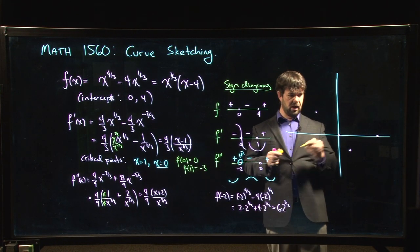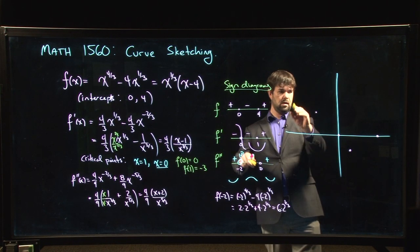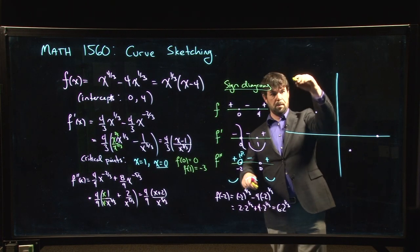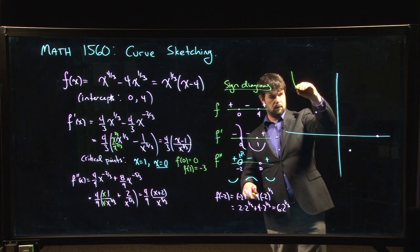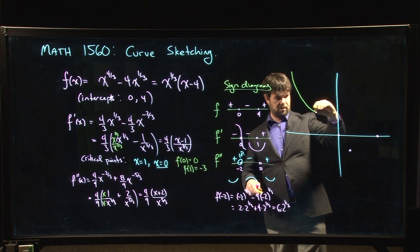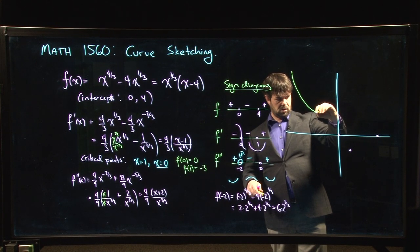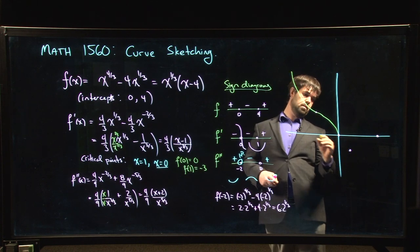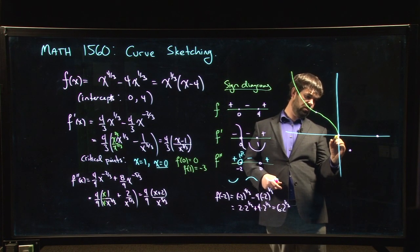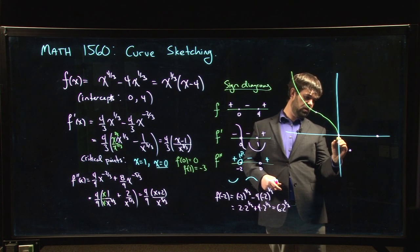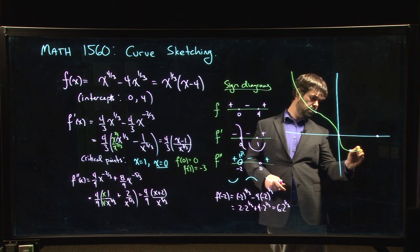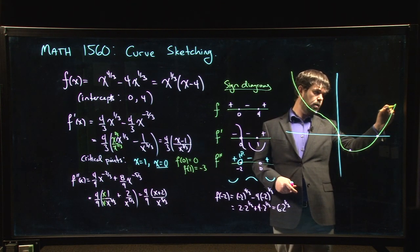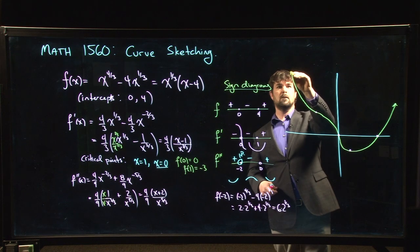So what I get is something that looks like this. I'm concave down, so I'm decreasing and I'm concave up until I hit my inflection point. Then I'm concave down. I pass through my minimum, or sorry, through this critical number with a vertical tangent, come to my minimum, back up, and off I go.